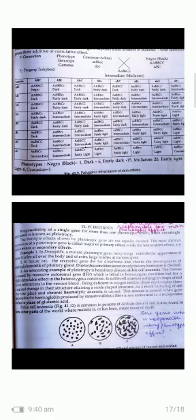Last is pleiotropy — the responsibility of a single gene for more than one phenotypic effect, often seemingly unrelated, is known as pleiotropy. A single gene is showing more than one phenotypic effect, and these effects are unrelated to each other but are all caused by only one gene. Multiple effects shown by pleiotropic genes are not equally distinct; they can be of two types: primary effects, which are more distinct expressions of pleiotropic genes, and secondary effects, which are less evident.